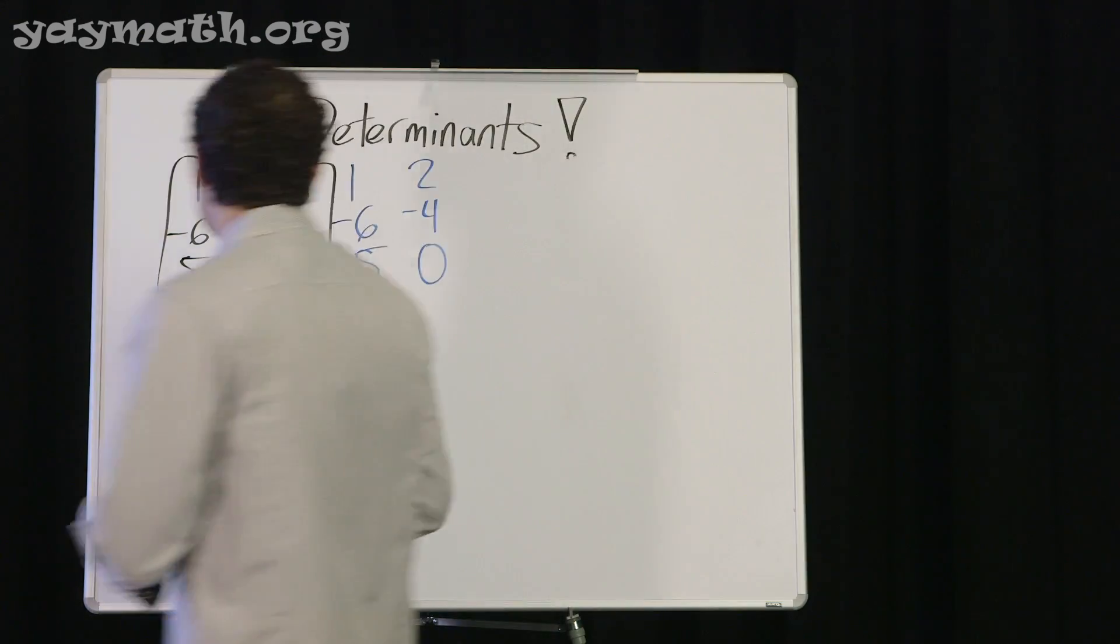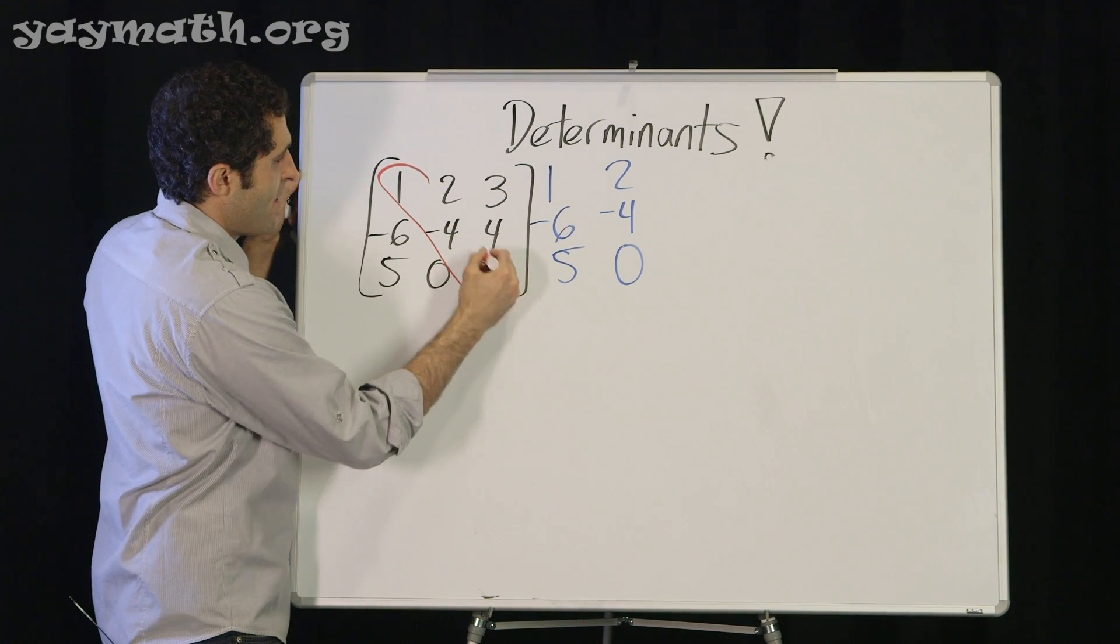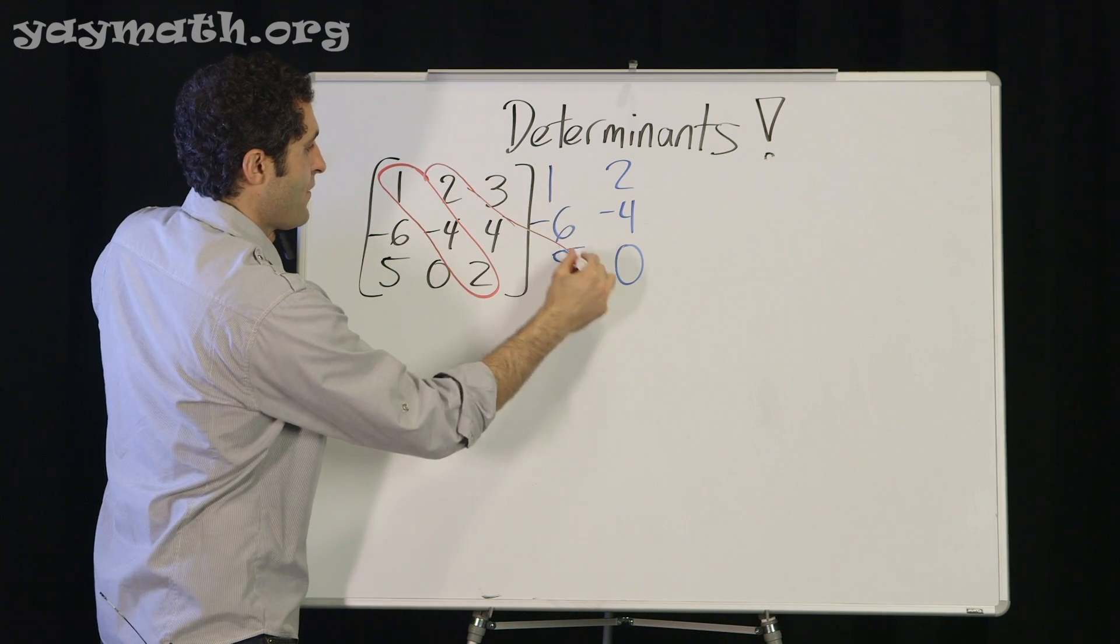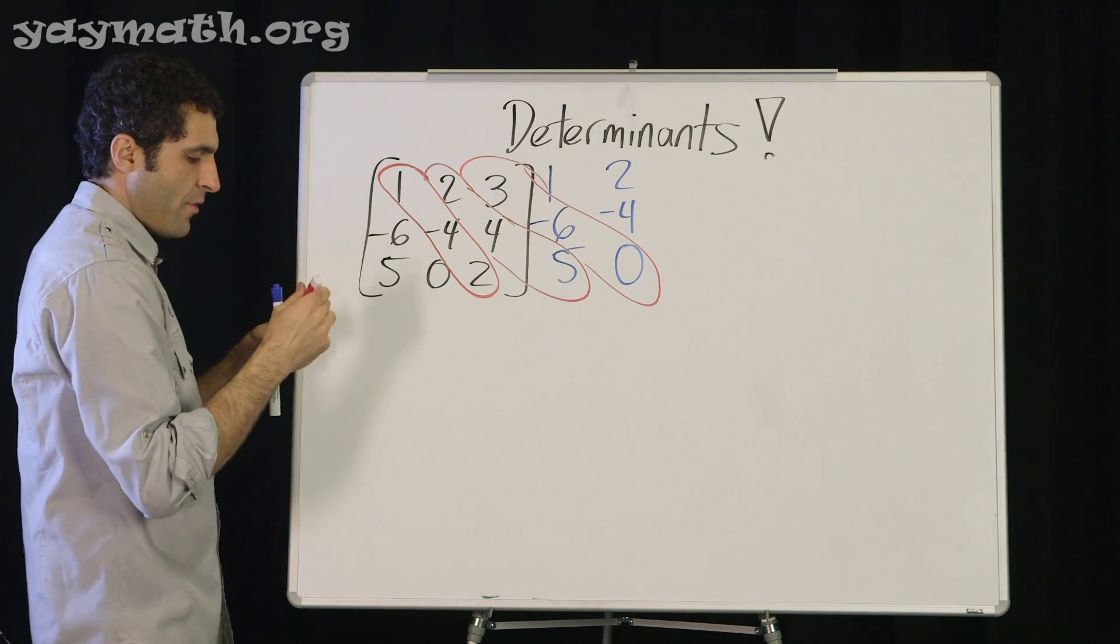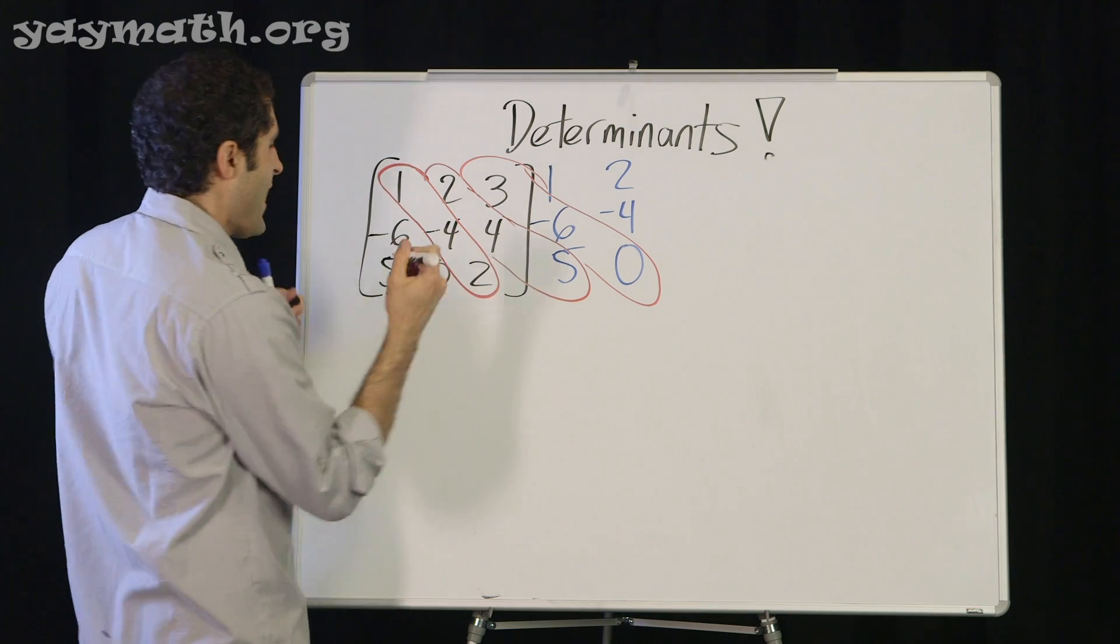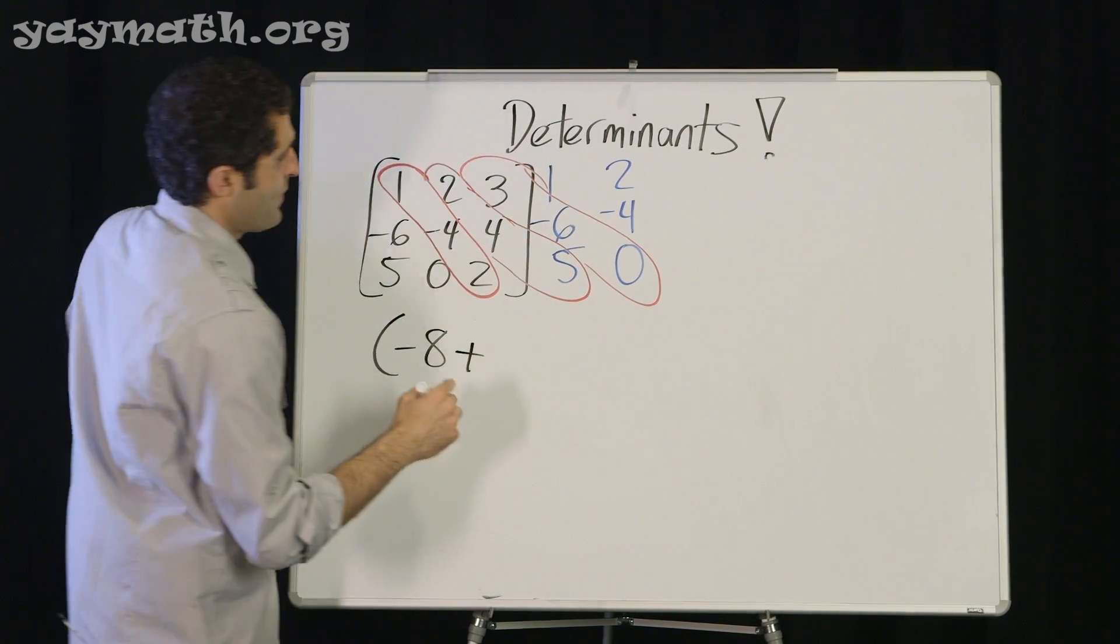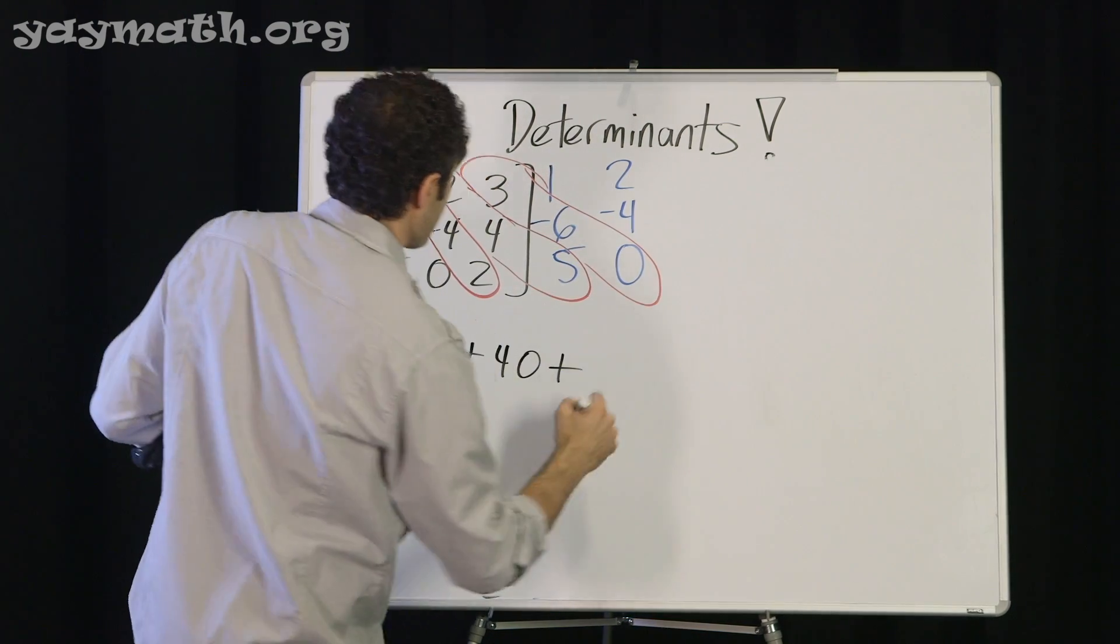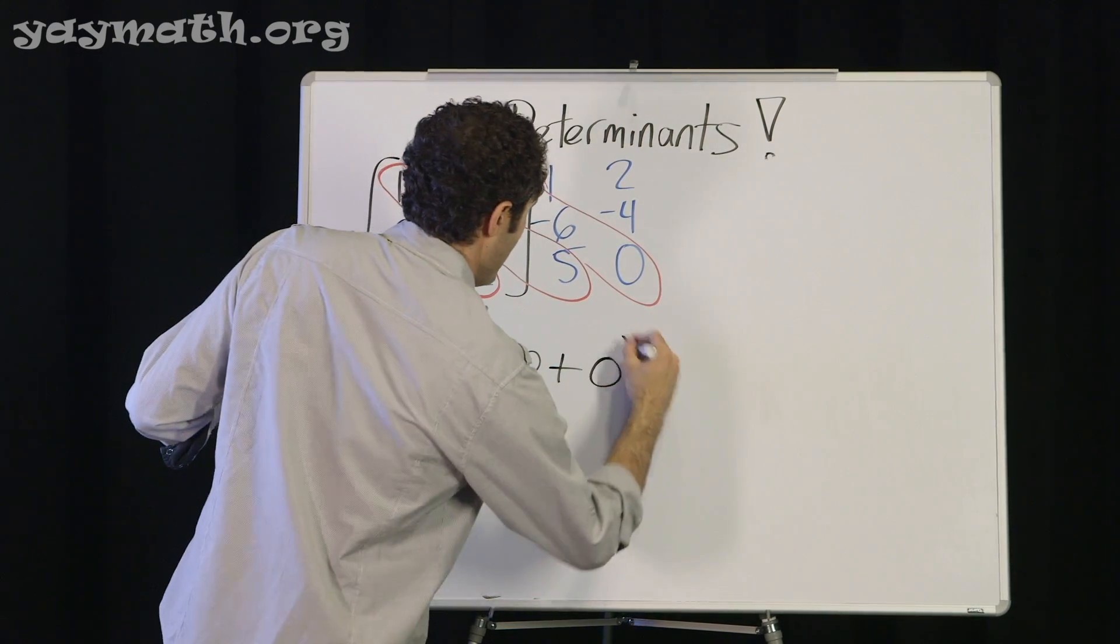So after we create these two additional columns, we multiply by diagonals. Let's do that in red. So we're going to go down the first three diagonals just like we did in the two by two matrix. Now we're doing with these. Then these go - the 2, 4, and the 5. And then these multiply. We're going to multiply all three of those. So let's do that. One times negative 4 times 2 is negative 8. We'll put that in. Negative 8. Plus 2 times 4 times 5. That's 8 times 5 is 40. Plus 3 times negative 6 times 0. Boom. Love when that happens. Zero.